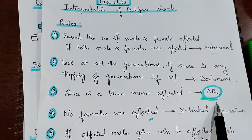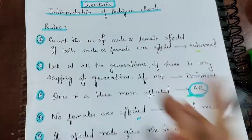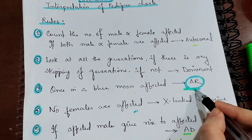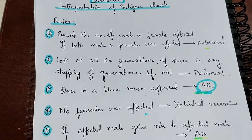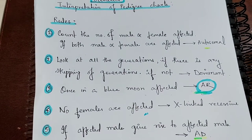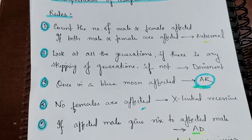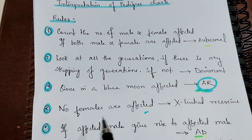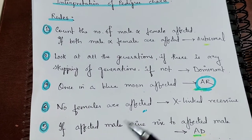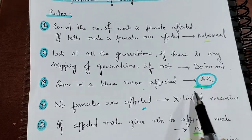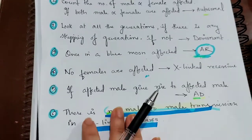Once in a blue moon affected — that is autosomal recessive. Why is it called 'once in a blue moon'? Individuals with autosomal recessive conditions usually suffer from infertility or die very early, so they are not able to transmit the disease to the next generation. Usually we find that nobody in the entire family tree is affected except for one child — that is once in a blue moon autosomal recessive.